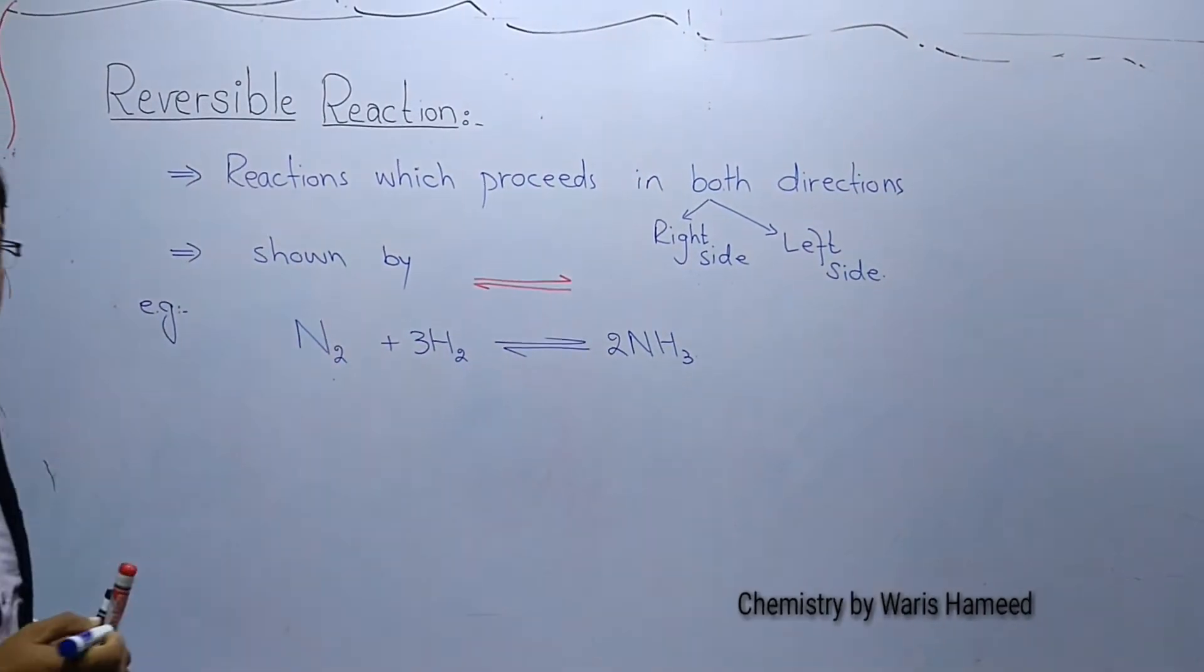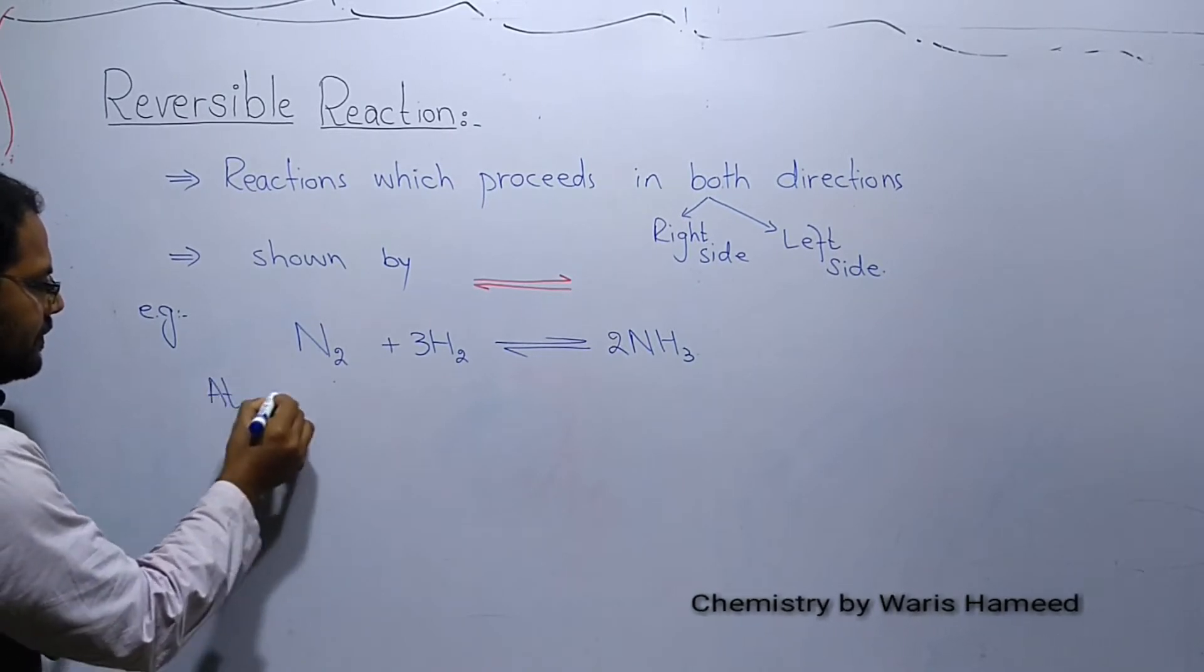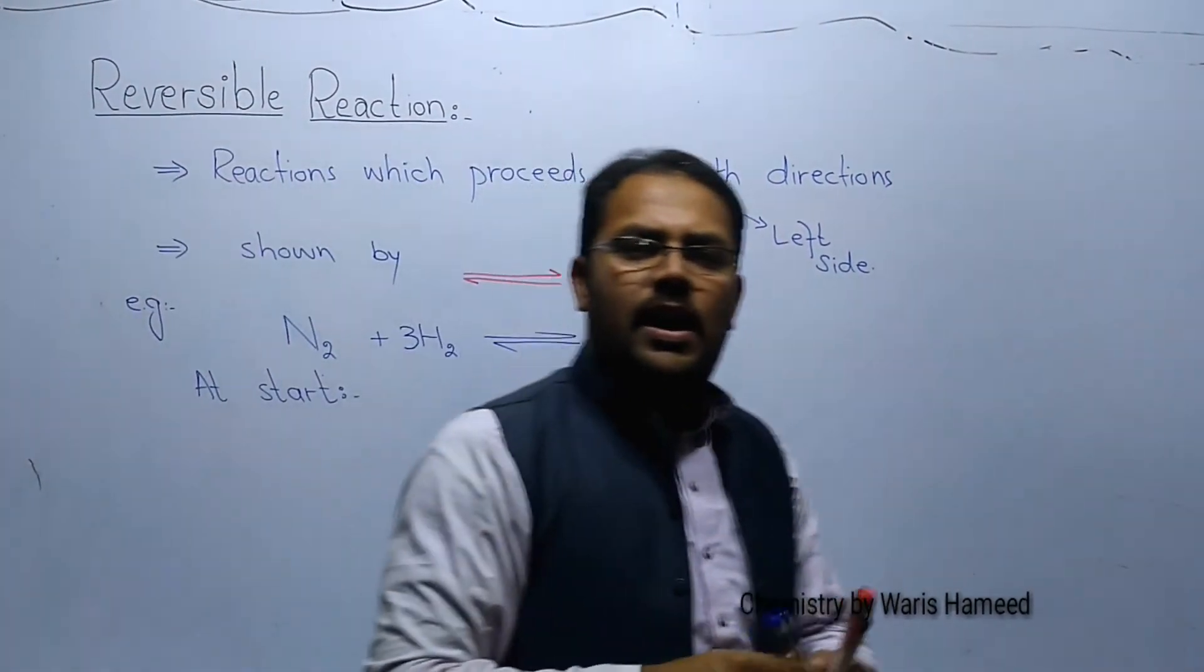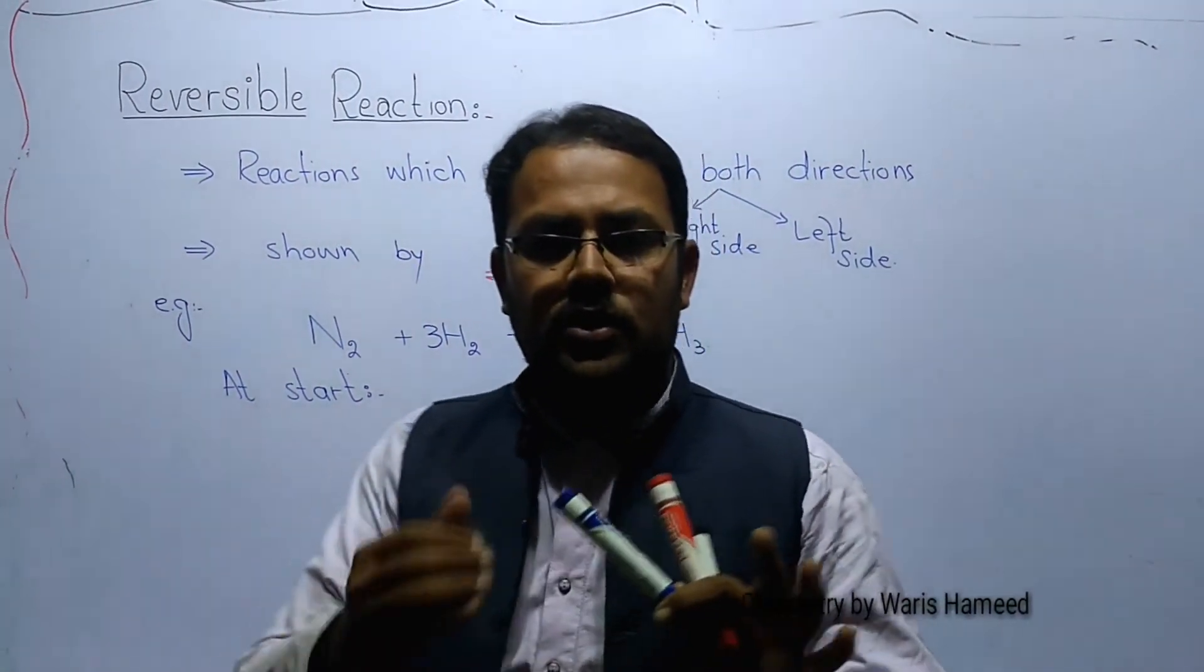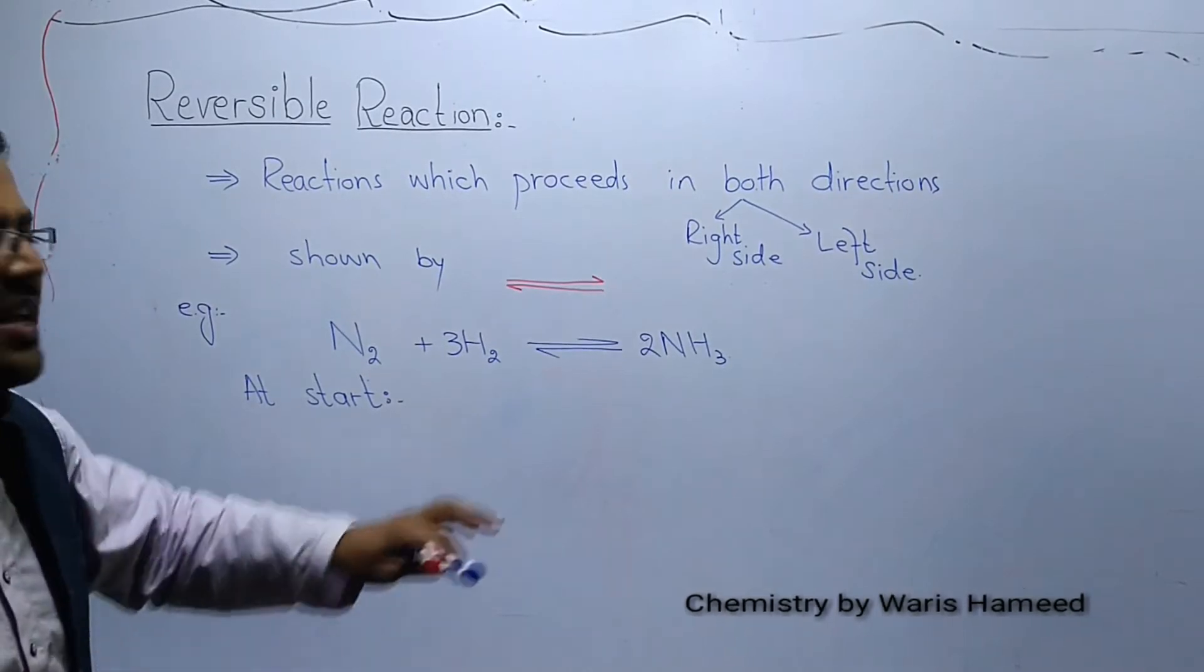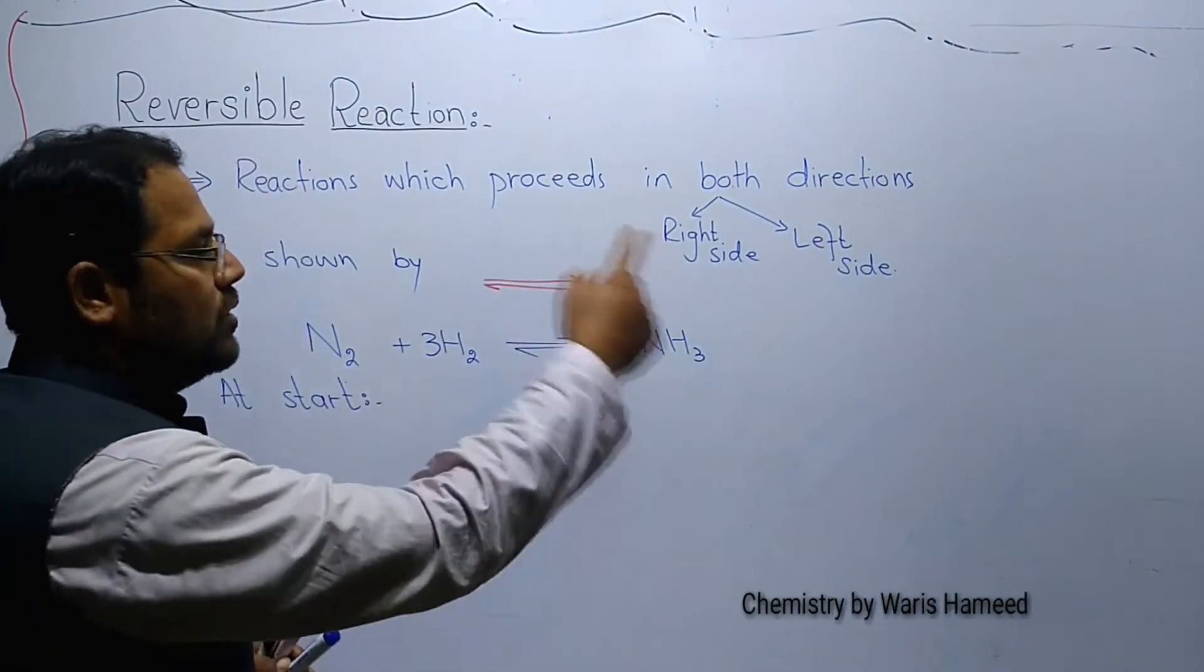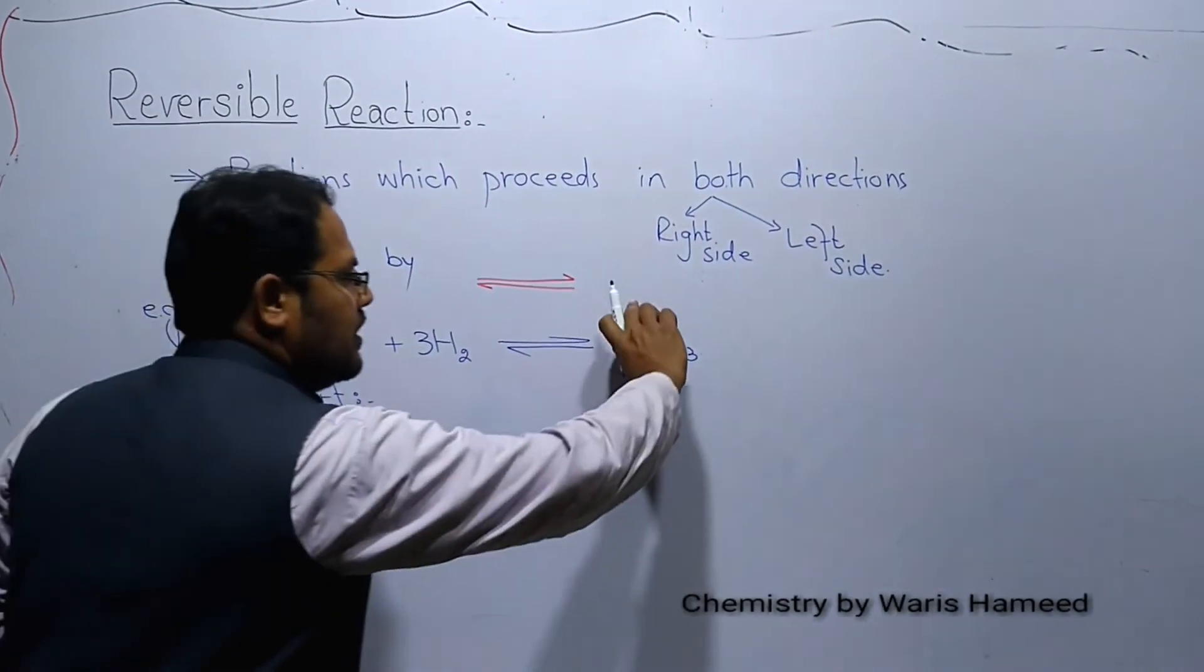At the early stage, we can say that nitrogen and hydrogen react and form ammonia. During the initial stage, there is only formation of ammonia and there will be just forward reaction to the right side.